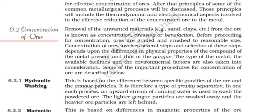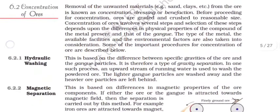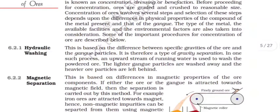Before proceeding for concentration, ores are graded and crushed to reasonable size. Concentration of ores involves several steps, and selection of these steps depends upon the differences in physical properties of the compound of the metal present and that of the gangue. The type of metal, the available facilities, and the environmental factors are also taken into consideration. Some of the important procedures for concentration of ore are described below.